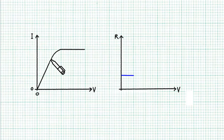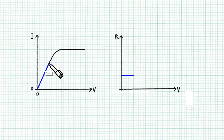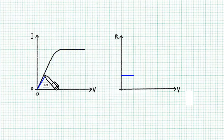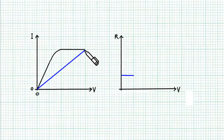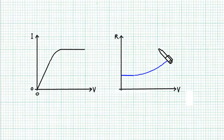Beyond this point, the I-V characteristic graph is no longer a straight line passing through the origin, and we can see that the resistance keeps increasing. If you use the wiper technique, you can see the wiper leaning more and more towards the V axis, so we know the resistance is increasing. So if you drew your resistance increasing, whether with a curved line or a straight line — well done, you got it correct.